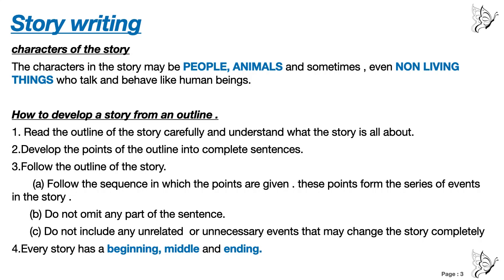Now, how to develop a story from an outline — there are 10 points. Number 1: read the outline of the story carefully and understand what the story is all about. You have to read the outline again and again. If at first you do not understand, then read the second time, or the third time or the fourth time. Read it properly and then understand what the story is all about.